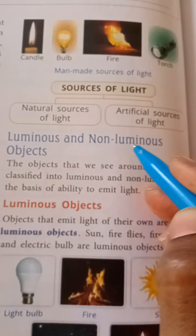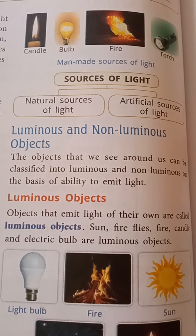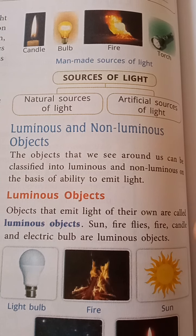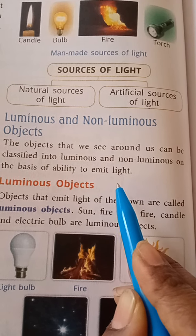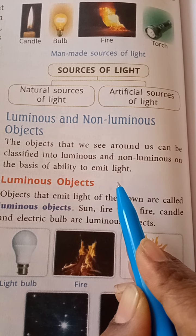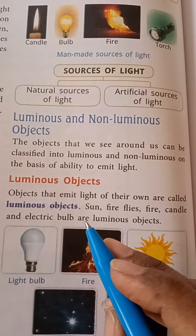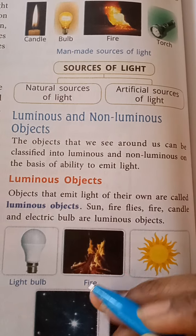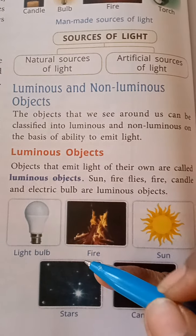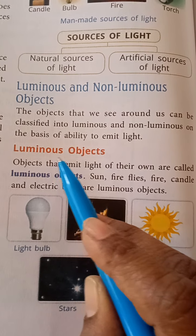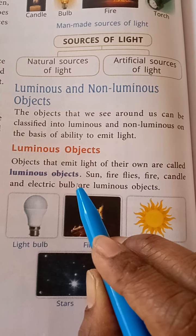The objects that we see around us can be classified into luminous and non-luminous on the basis of their ability to emit light. Looking at our surroundings, there are many objects. On the basis of their ability to emit light, they are called luminous objects.